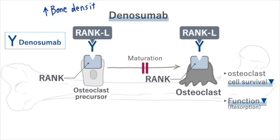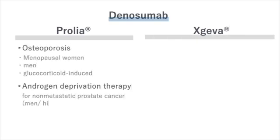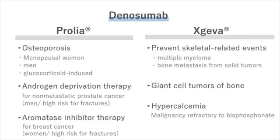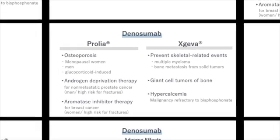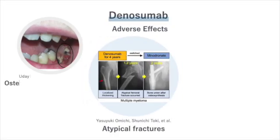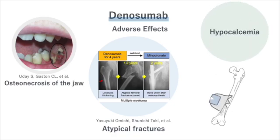Denosumab increases bone density. It is marketed under brand names such as Prolia and Xgeva, each with slightly different indications. Notable adverse effects include atypical fractures, osteonecrosis of the jaw, and hypocalcemia.